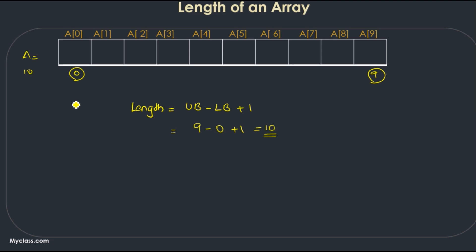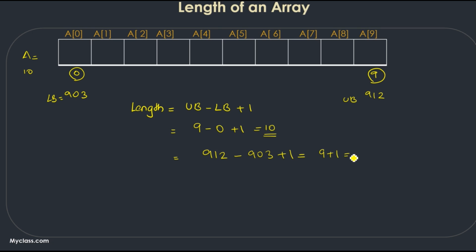Let's assume that the index is not starting from 0. If the index is starting from 903, then the last element index should be 912. We can still get 10 elements in this array. Here the upper bound equals 912 and the lower bound equals 903. So, 912 minus 903 plus 1 equals 10. The length of the array is 10. So this is the equation for finding the length of an array: upper bound minus lower bound plus 1.